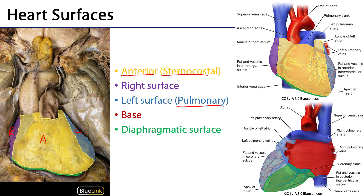There is also a diaphragmatic surface, which is difficult to see from a profile view. Looking at the posterior view of the heart, we can see that the diaphragmatic surface is rather extensive — it corresponds to the surface lying above the pericardium, which is fused to the diaphragm.